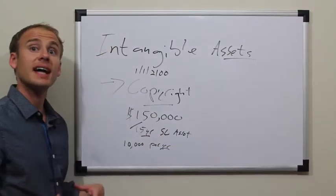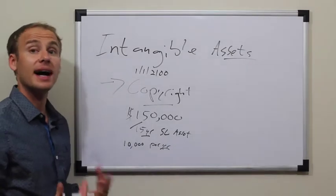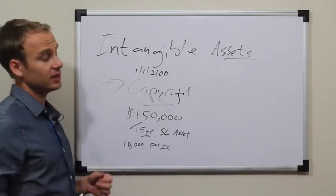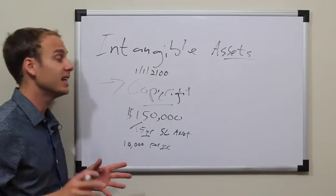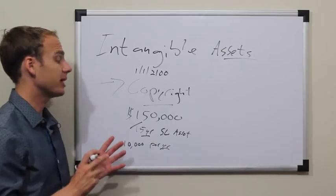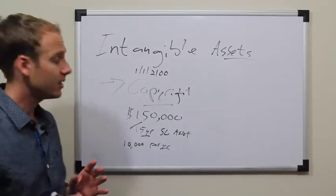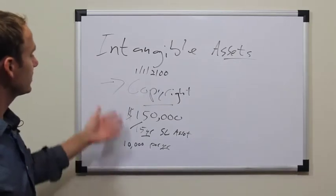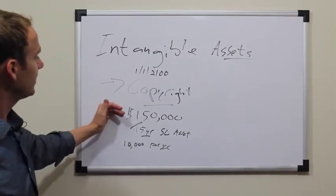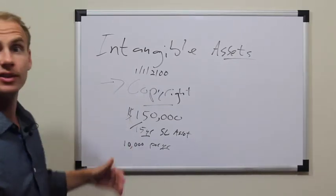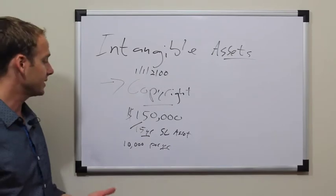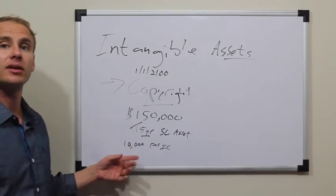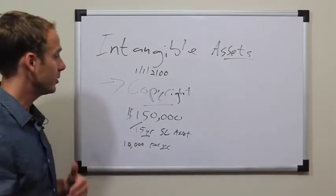Under GAAP or IFRS there might be other types of rules, such as testing for impairment — is this copyright still valuable? Has it lost value? Should the whole thing be written off? But for our purposes, we're saying $150,000 over a 15-year straight-line amortizable asset, so $10,000 per year will be written off year by year.